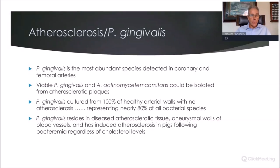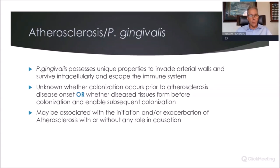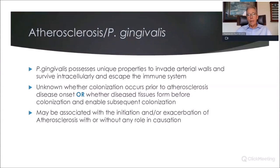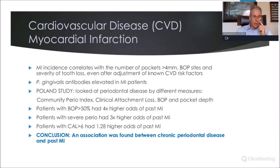P. gingivalis resides in diseased atherosclerotic tissue and the walls of aneurysms. In animal studies using pigs, you can actually induce atherosclerosis following bacteremia with P. gingivalis even when cholesterol levels are kept low. P. gingivalis has unique properties to invade the arterial wall, survive there, and escape the immune system. We don't know whether colonization occurs prior to atherosclerosis disease onset, or whether diseased tissues form and then enable subsequent colonization — but it may be associated with the initiation or exacerbation of atherosclerosis. We know for a fact it's there, and we'd certainly rather it not be.